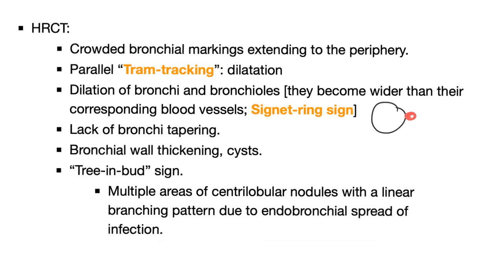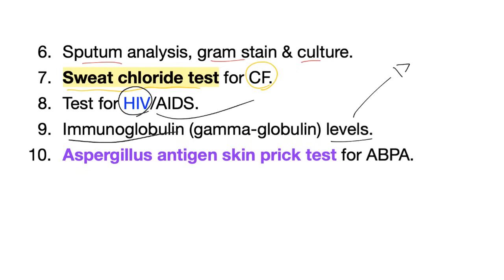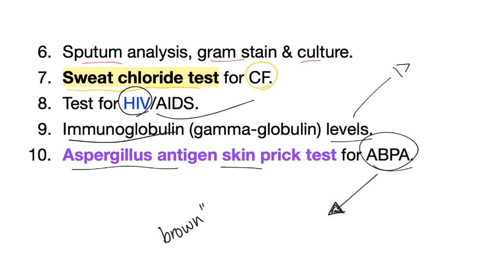Look up the tree-in-bud sign using your search engine. For investigation: sputum Gram stain and culture if infection is suspected. Sweat chloride test if cystic fibrosis is suspected. Test for HIV, since it's one of the causes. Test immunoglobulin levels because hypogammaglobulinemia is a cause. Aspergillus antigen skin prick test if you suspect allergic bronchopulmonary aspergillosis — which is a patient with chronic persistent asthma or cystic fibrosis not responding to treatment, describing brown sputum with infiltrates on X-ray that come and go.